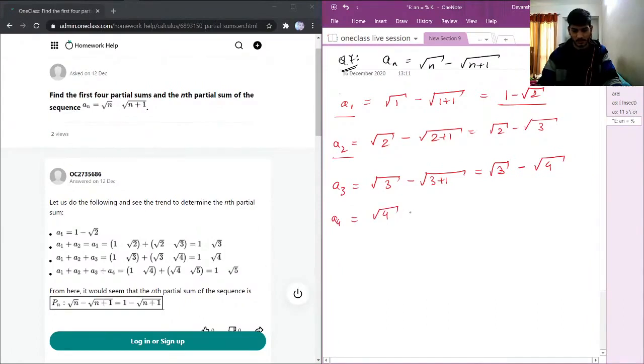We have a4, which is square root of 4 minus square root of 4 plus 1. This will be square root of 4 minus square root of 5.